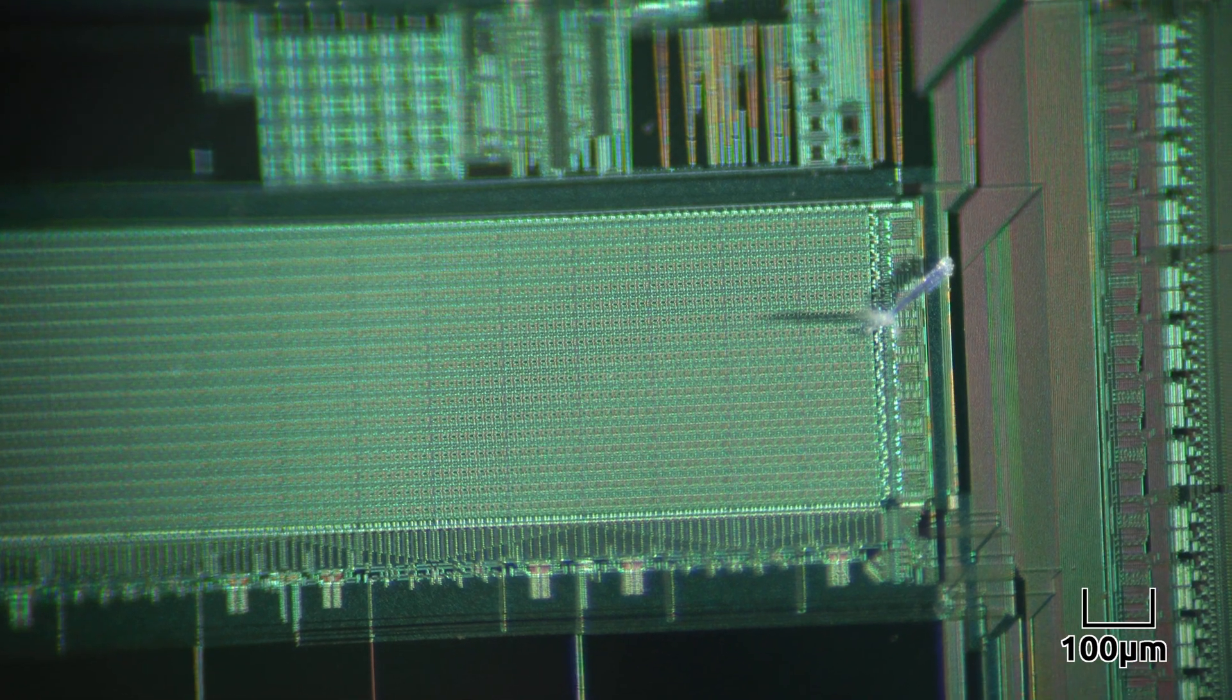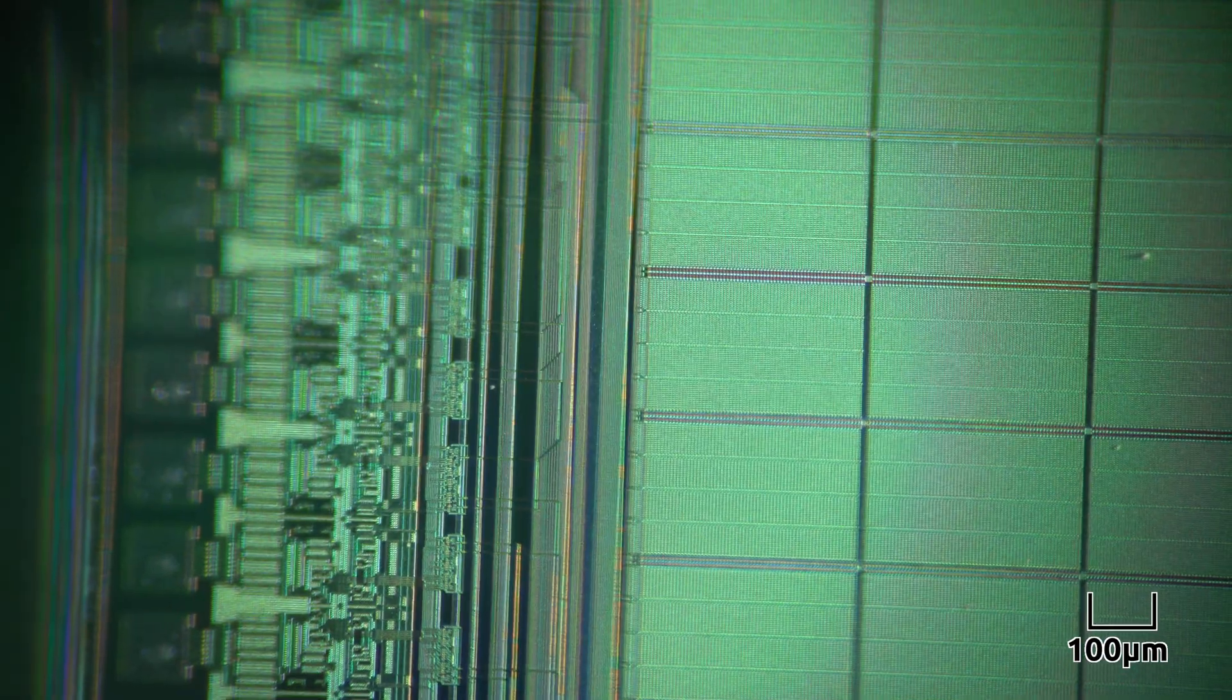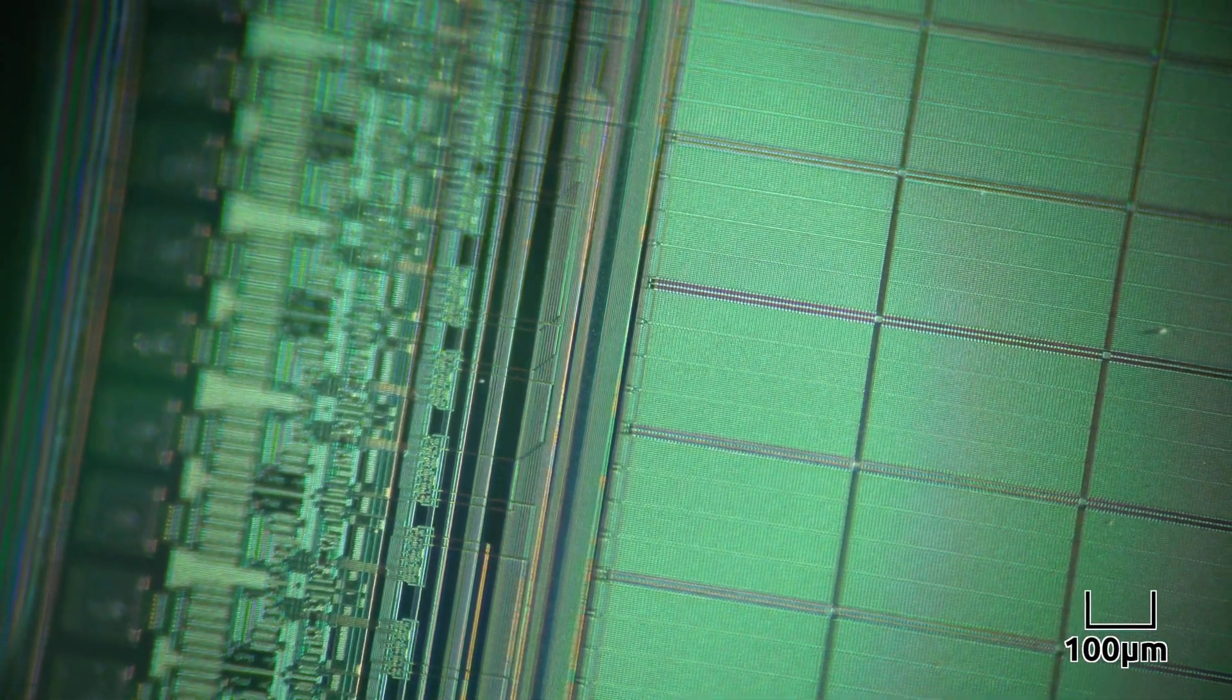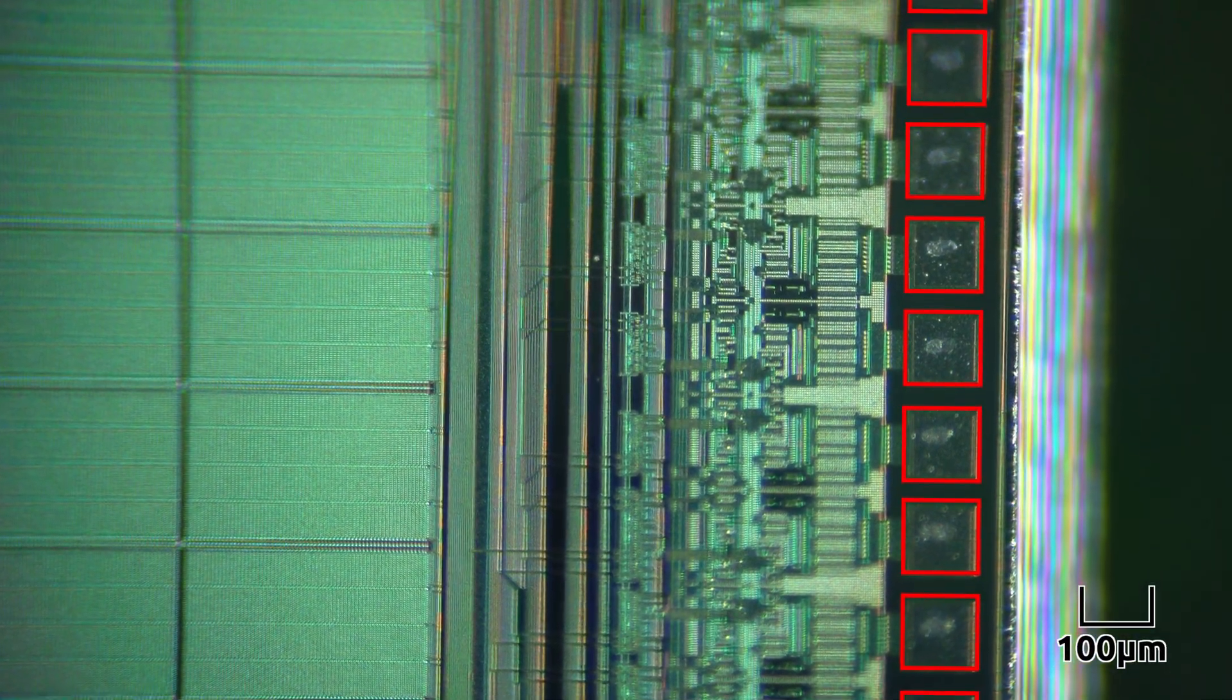And here you can see a dust fiber casting a shadow over the chip as it rotates. Here you can see a close-up view of the largest memory area on the chip. And here you can see a close-up view of the edge of the chip.